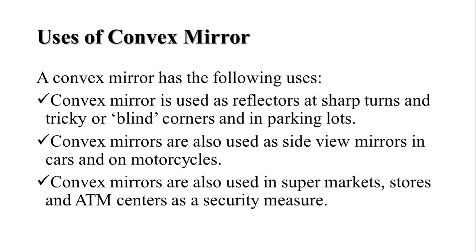Now let us discuss the uses of convex mirrors. First, the convex mirror is used as a reflector at sharp turns and tricky or blind corners and in parking lots. Convex mirrors are also used as side view mirrors in cars and motorcycles because they form a small image of large objects.